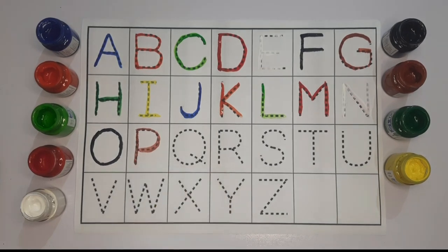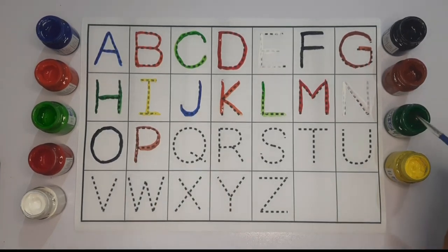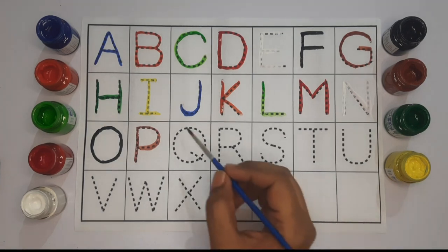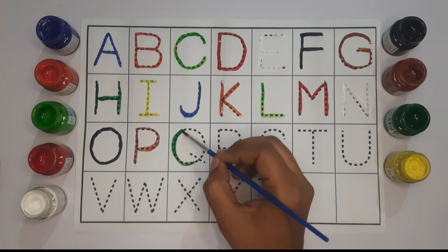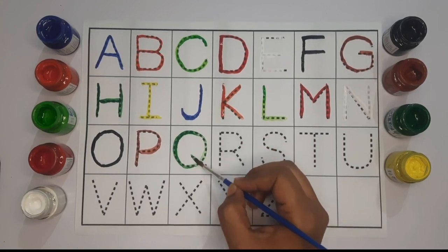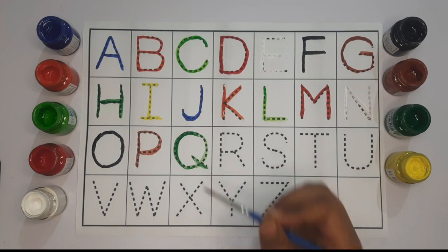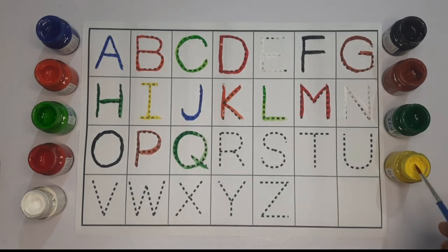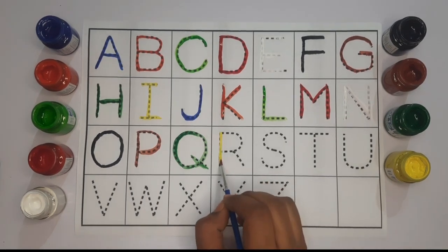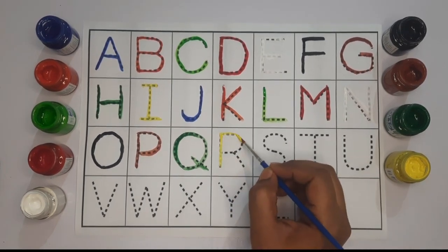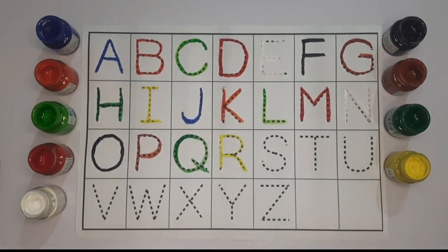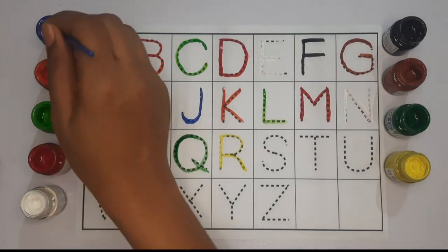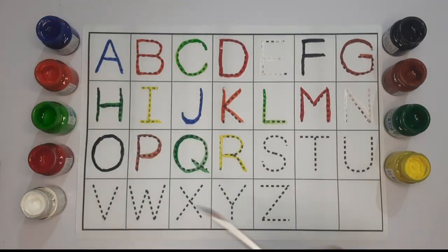Now we will use brown color to write P. This is P. Now we will use green color to write Q. This is Q. Now we will use yellow color to write R.